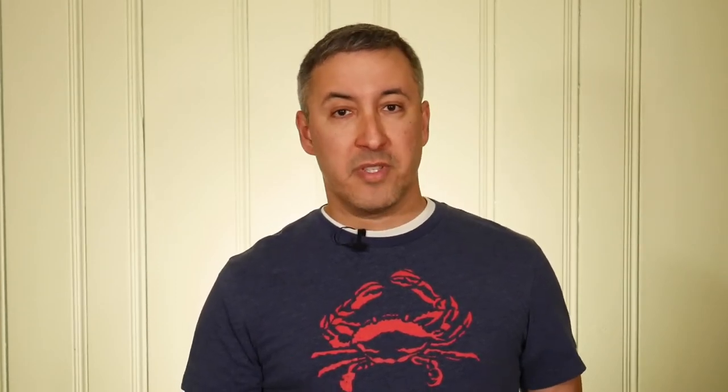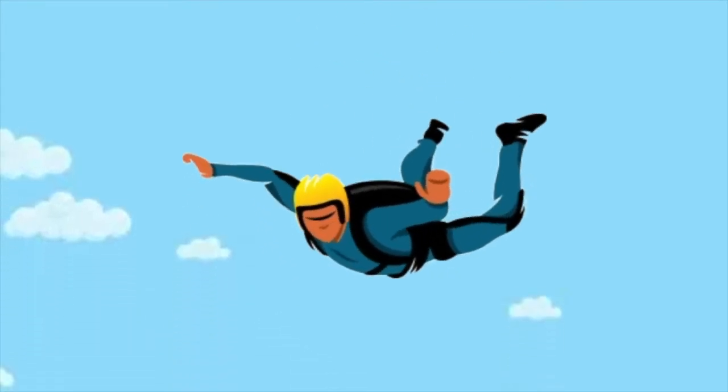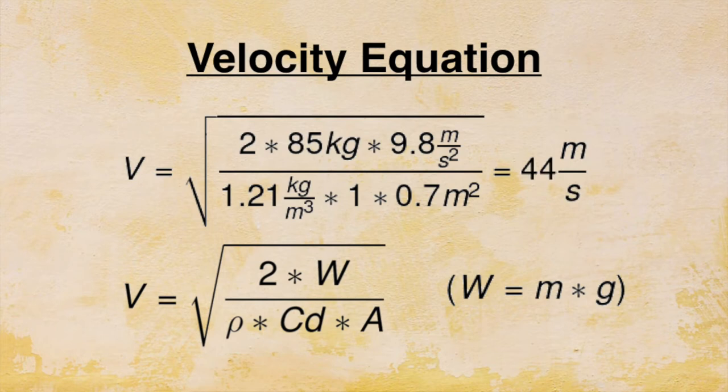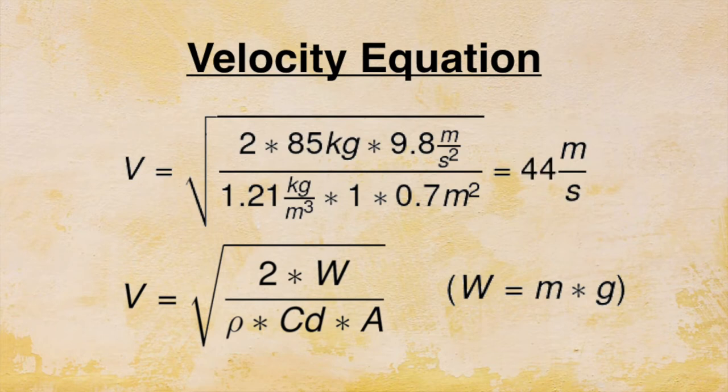By changing to a spread eagle position and increasing their surface area, the skydiver can lower their terminal velocity. Using mass equals 85 kilograms, gravity equals 9.8 meters per second squared, air density equals 1.21 kilograms per meter cubed, drag coefficient equals 1, and surface area equals 0.7 meters squared, we see that terminal velocity is 44 meters per second, which is 98 miles per hour or 158 kilometers per hour. By changing positions to increase their surface area relative to the ground, the skydiver is able to decrease their terminal velocity by about half. This is still really fast, which is why a parachute is needed, but you can see the effect of surface area on terminal velocity.